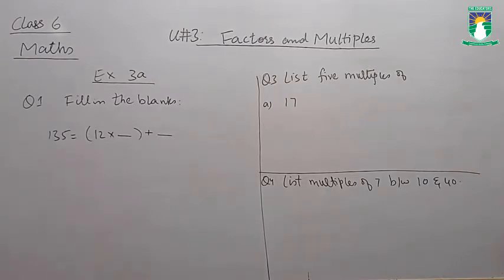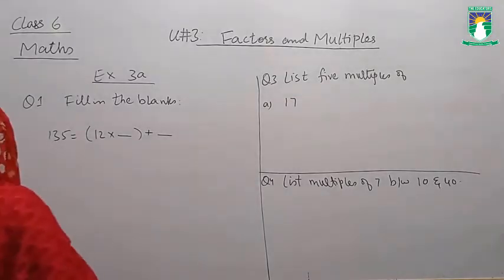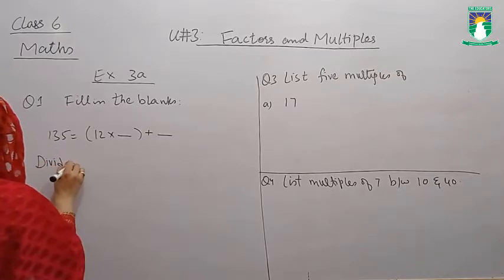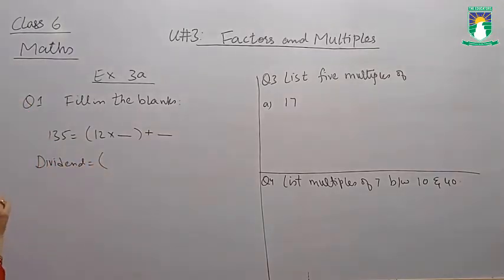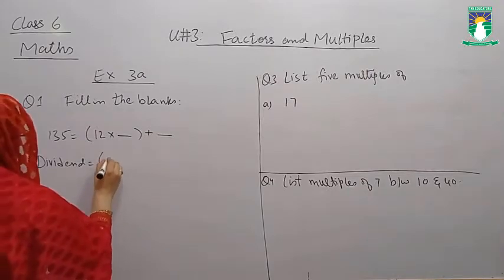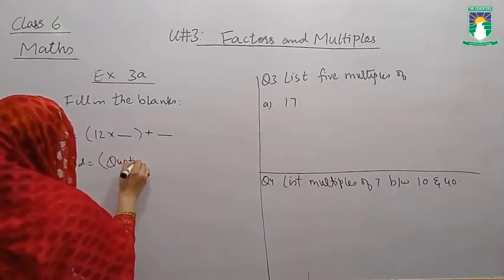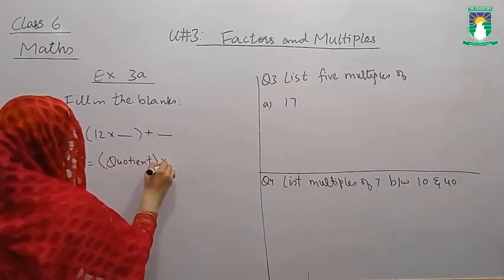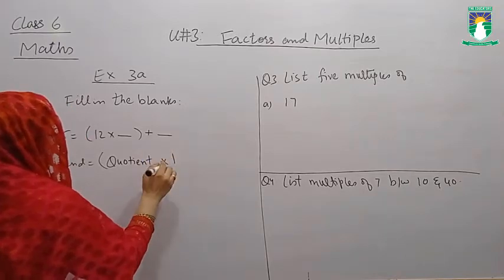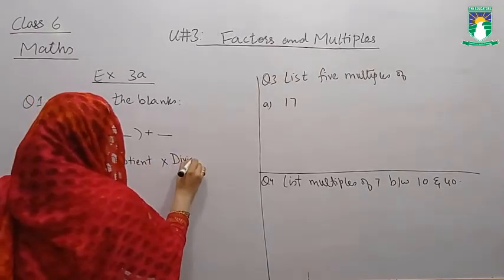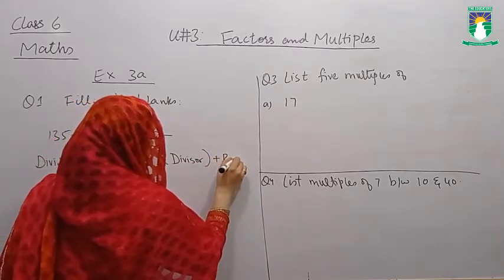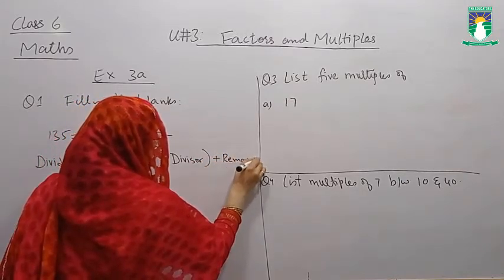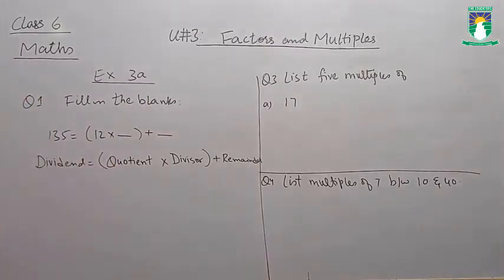Divided is equal to Quotient multiplied by Divisor plus Remainder. This is the formula.